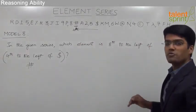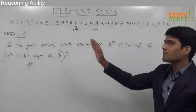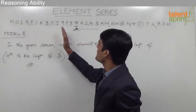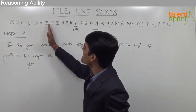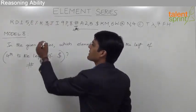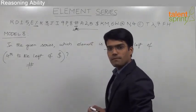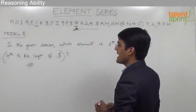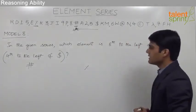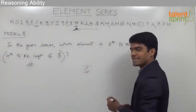Now we need to find out the element which is 8th to the left of hash. Moving to the left of hash, the 8th element would be 1, 2, 3, 4, 5, 6, 7, and 8 — so the answer here would be percentage. The element which is 8th to the left of the 4th to the left of dollar is percentage.